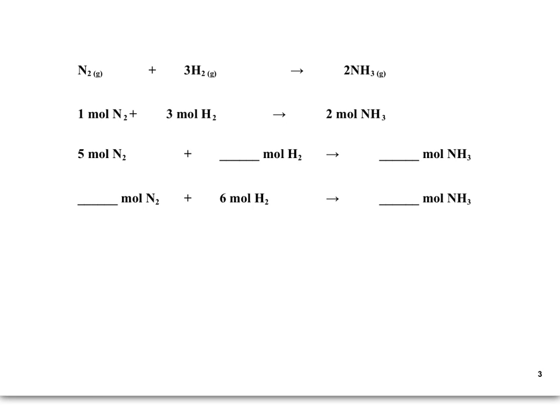The coefficients in a balanced chemical equation can tell us about the ratio of moles of the reactants and products. So nitrogen has a coefficient of one, so we can think about that as one mole. Hydrogen has a coefficient of three, so we can think about that as three moles. And ammonia has a coefficient of two, so we can think about that as two moles.